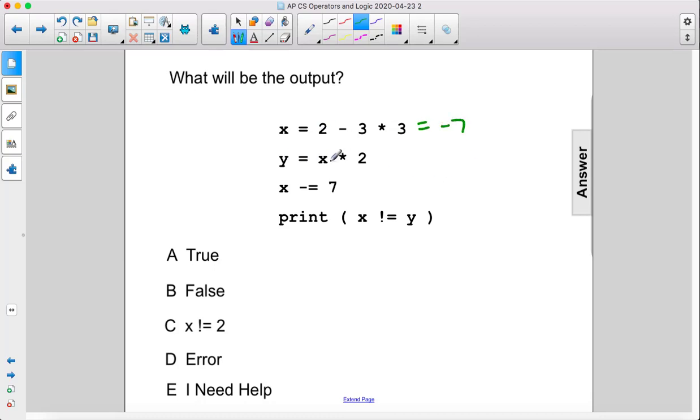Then y equals x times two. X is negative seven times two is negative 14.